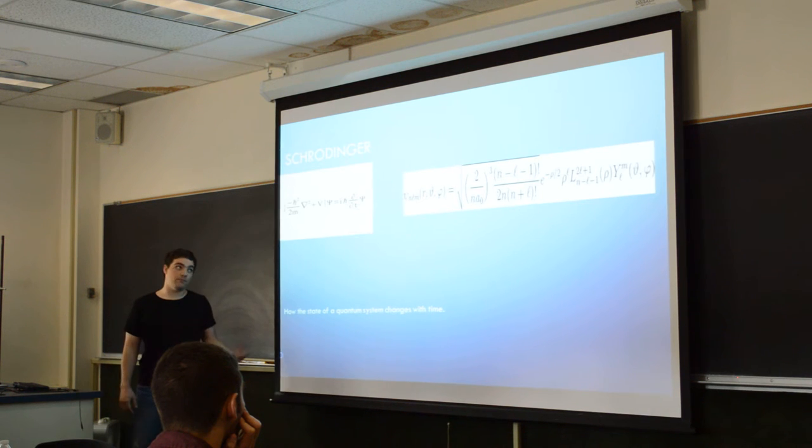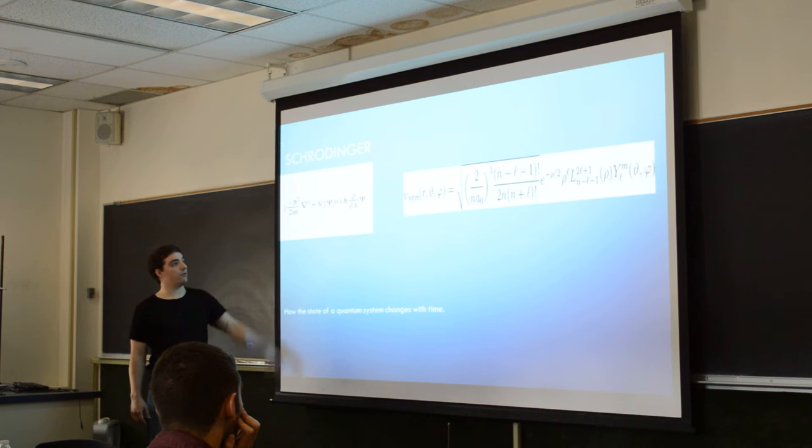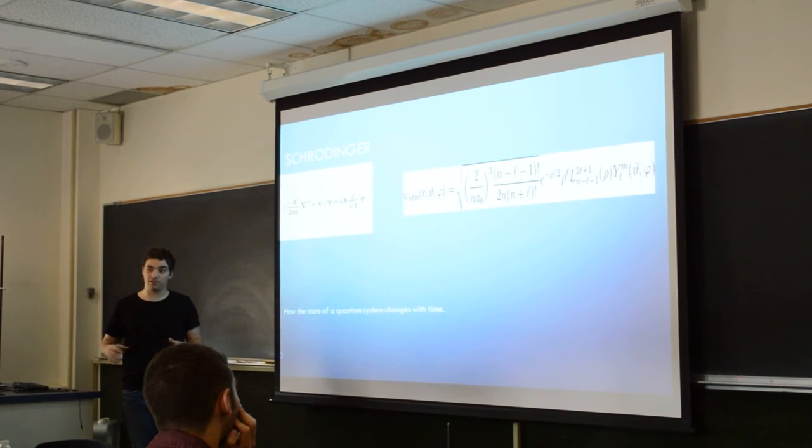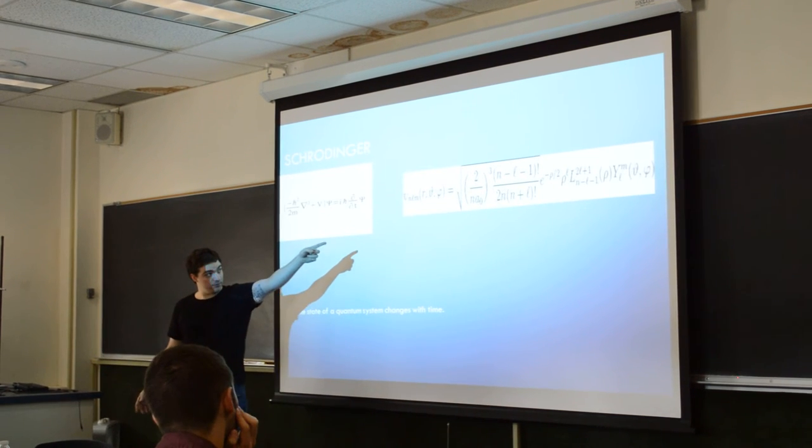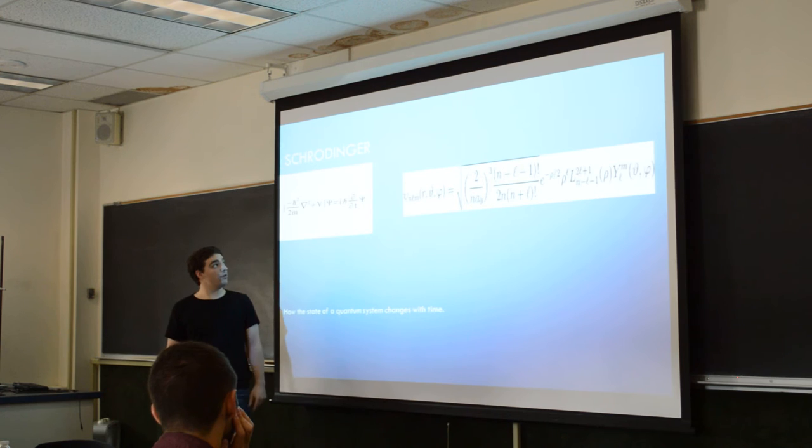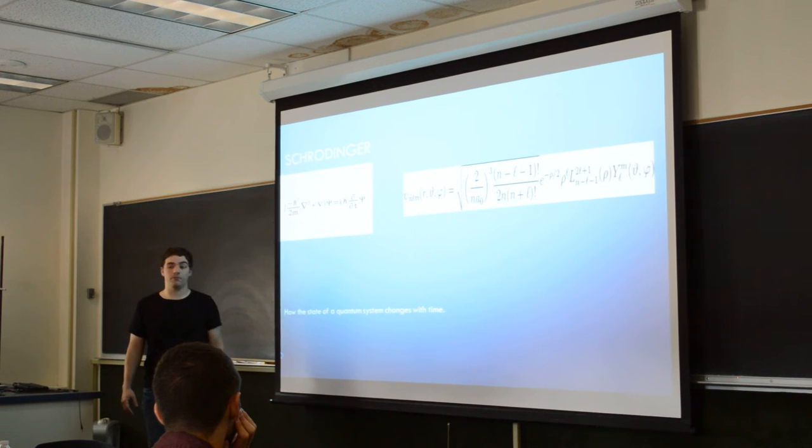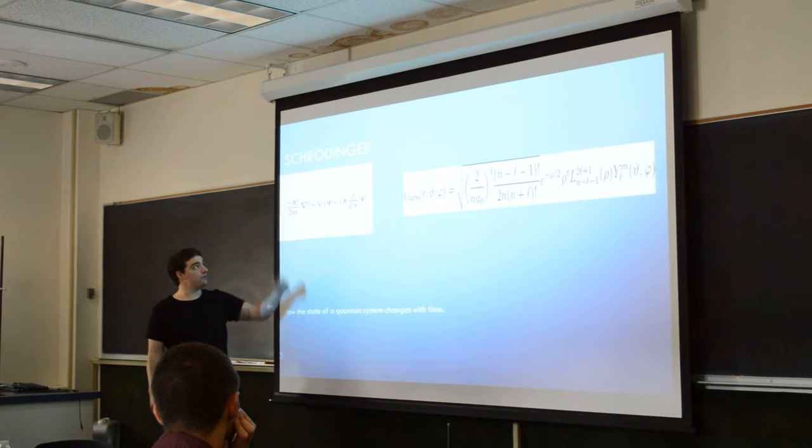Moving on from that, we have just our normal Schrödinger equation. Find out how the quantum state of the system evolves over time and you can figure out your probability densities, which is your wave function. You have your hydrogen atom one. You can use this to find out almost anything about the system you're working with, the energy levels and whatnot.